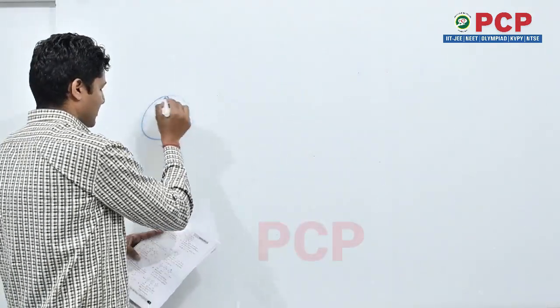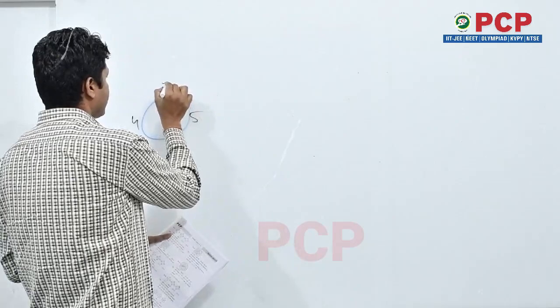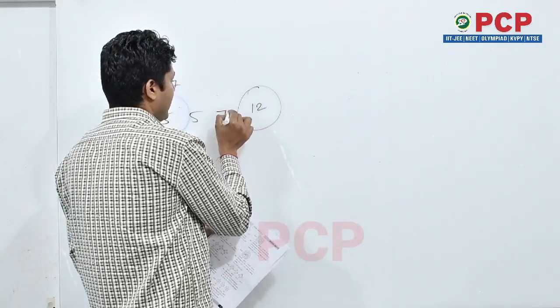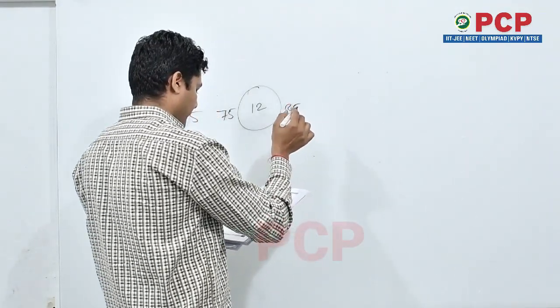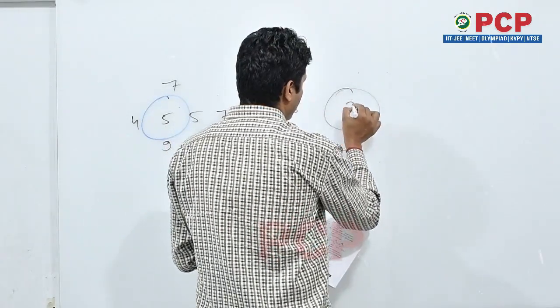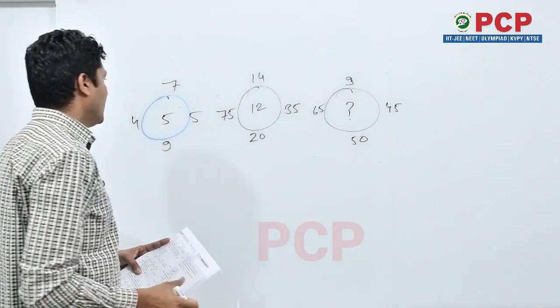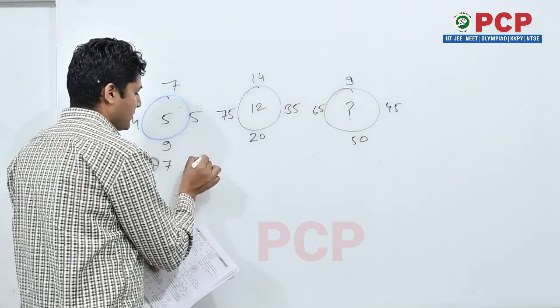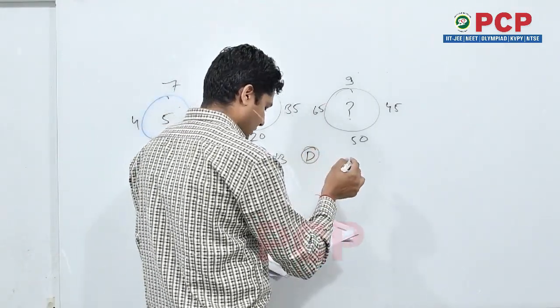5, 4, 5, 7, 9, 12, 75, 12, 35, 20 and 14. Again question mark, 45, 65, 9, 50. Option is A 7, option B 9, option C 13, option D 15. We have to find this out.